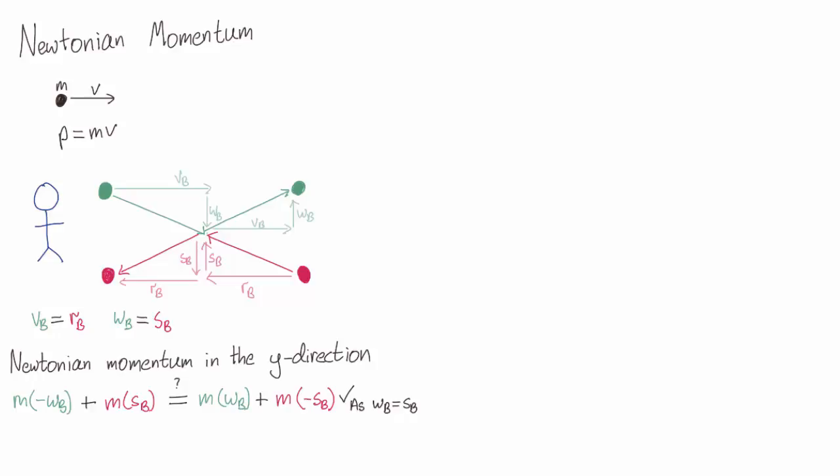From relativity, there is no special inertial reference frame. We don't just want momentum conserved in one frame, but in all frames. Let's pick a frame where Alice starts where the green ball starts and moves to the right with speed vb, matching the horizontal velocity of the green ball. Let's see how things look in Alice's frame.